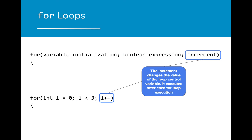The last component is the increment. The increment changes the value of the loop control variable and is executed after the for loop is executed. This increment is increasing the value of i after every time the for loop finishes executing. Because of this, the value of i eventually increases to three, which will stop the loop.